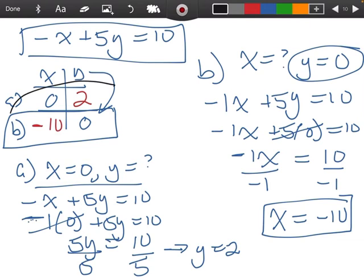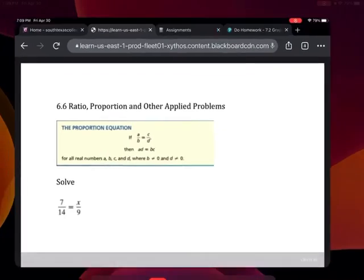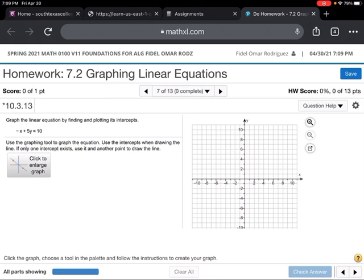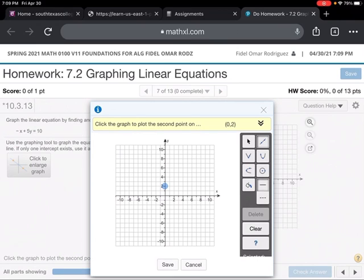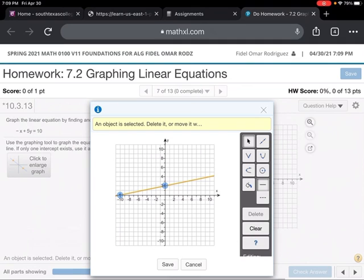Now, these are the points that I want to plot. I want to plot the point (0, 2) and the point (-10, 0). I'm going to click on my line button, and the first point we had was 0 and 2, that should be that one right there. The next one was negative 10 and 0 right there, and I'm going to hit save.